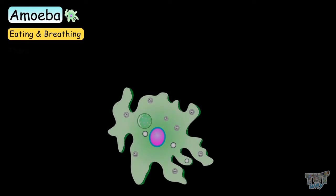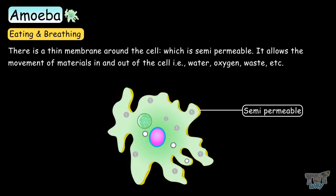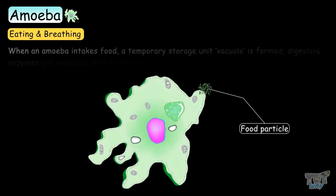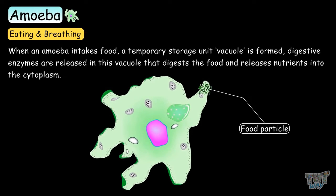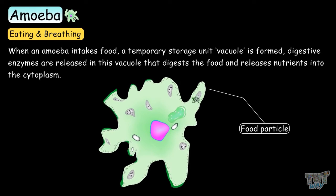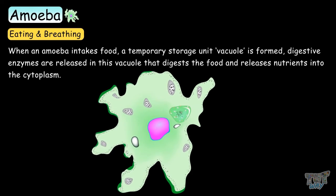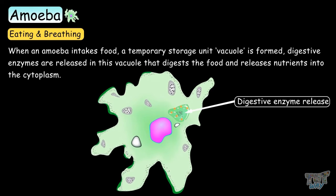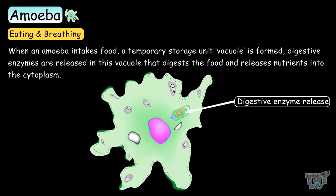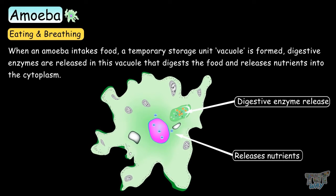Now let's learn how an amoeba eats and breathes. There is a thin semi-permeable membrane around the cell that allows the movement of materials in and out of the cell — water, oxygen, and waste. When an amoeba intakes food, a temporary storage unit called a vacuole is formed. Digestive enzymes are then released into the vacuole, which digests the food and releases nutrients into the cytoplasm.